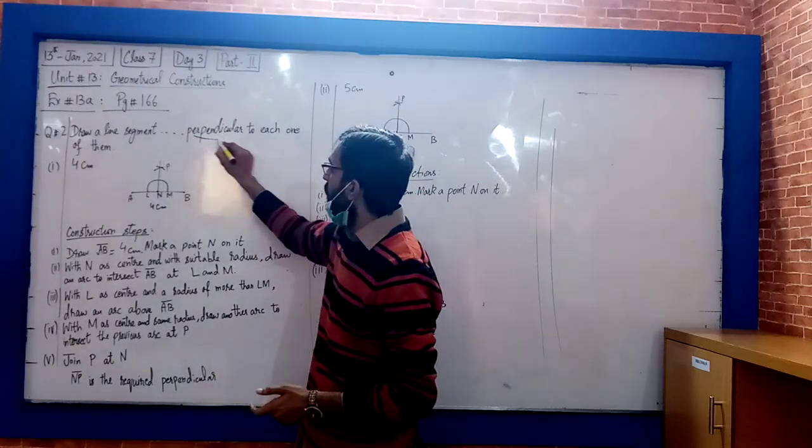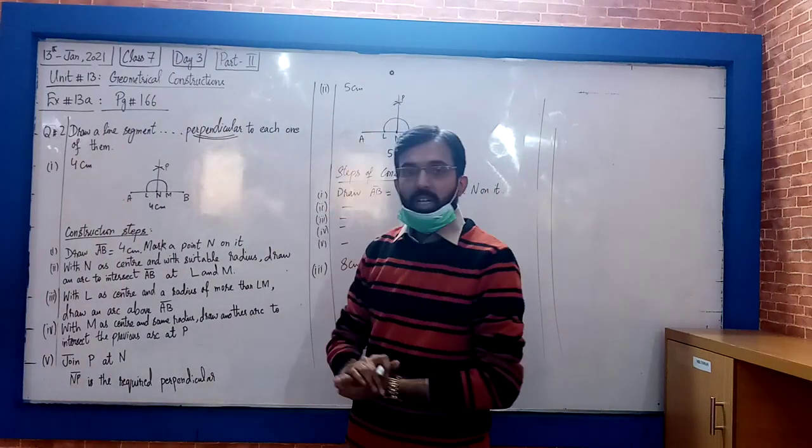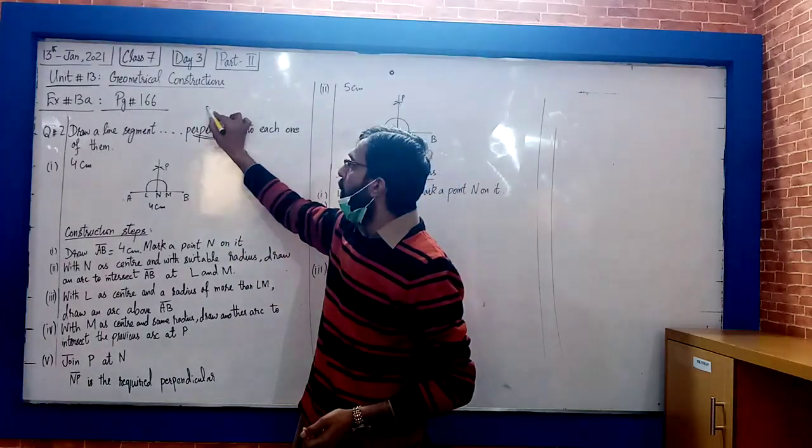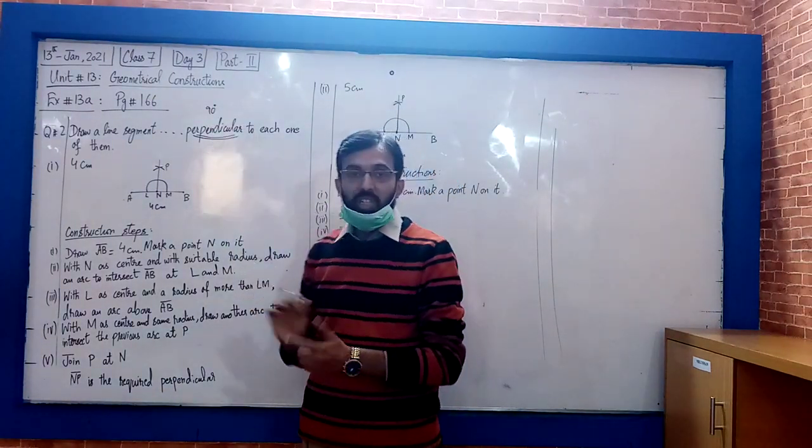What is called perpendicular? Perpendicular is basically a straight line which is at a 90 degree angle.